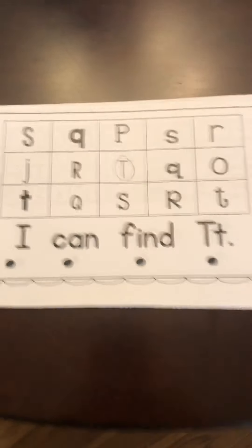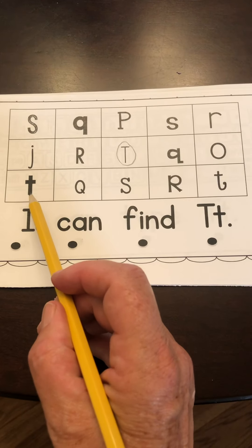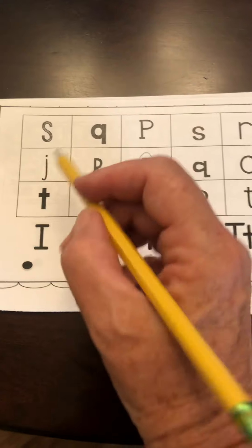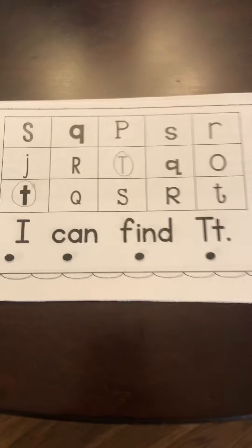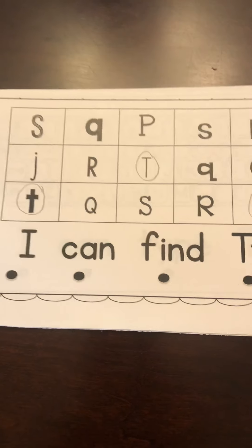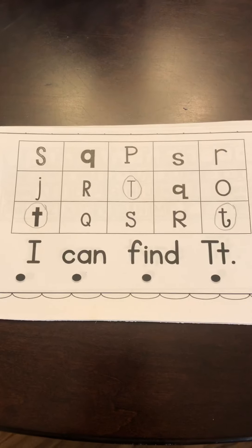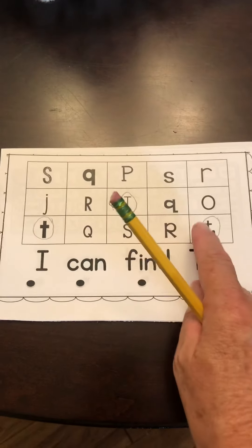And you're going to circle it. Then you look in the next row. I see a bold T. I'm going to circle it. And then there's a fancy T. Going to circle that one too. Let's count how many T's we found. One, two, three.